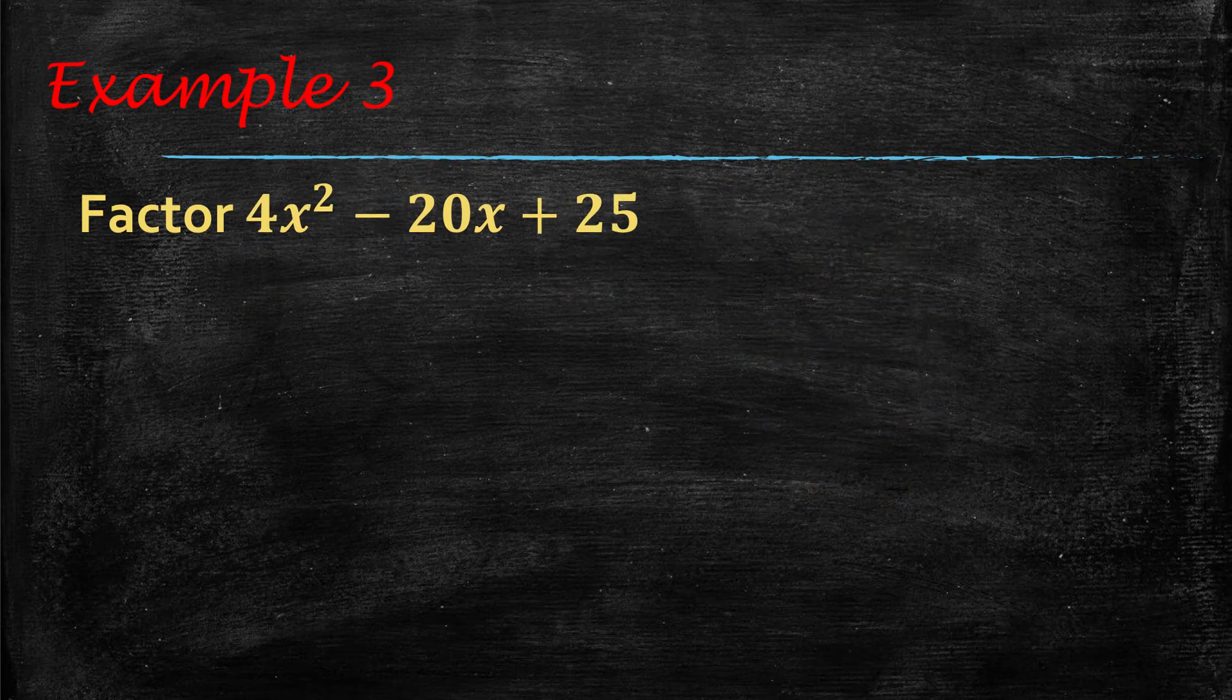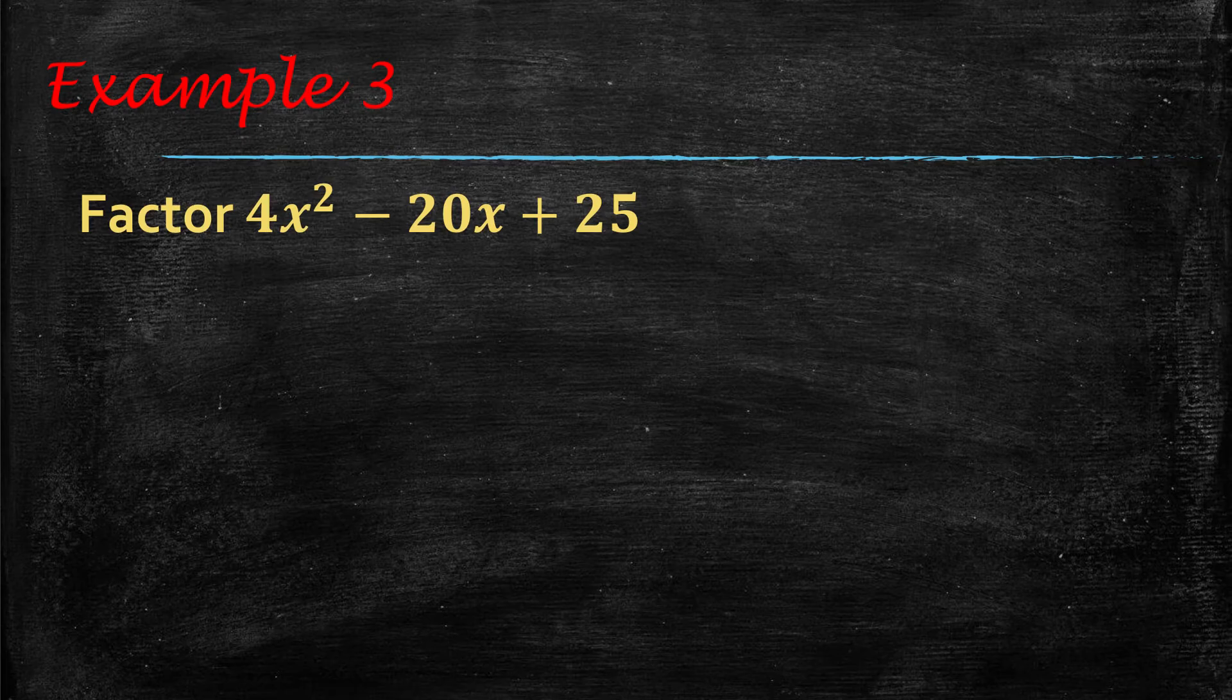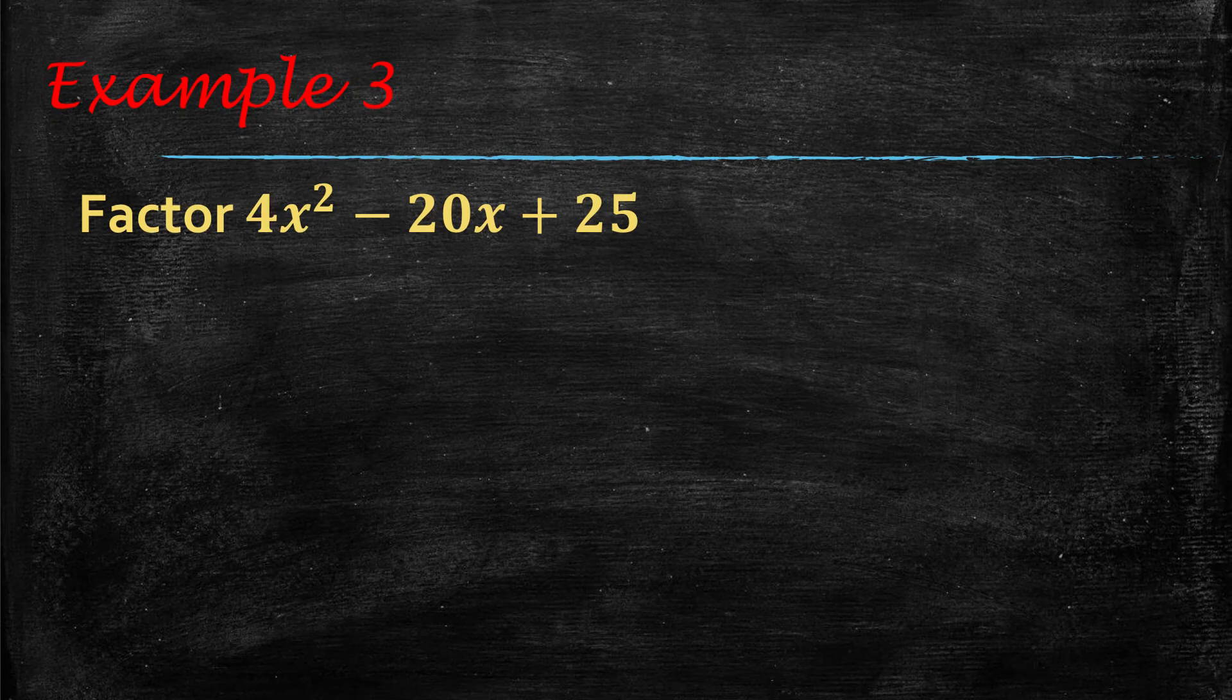All right, last one. Let's check to see if this is a perfect square trinomial. Now first, you would want to look for a GCF. I haven't mentioned that, but you should always look for a GCF. There's nothing that can go into 4, 20, and 25, so this does not have a GCF. But let's check and see if it is a perfect square trinomial.